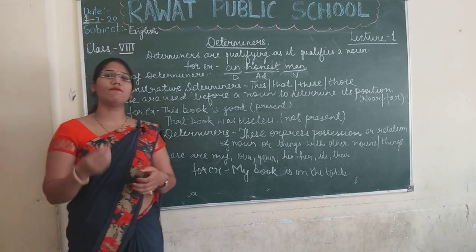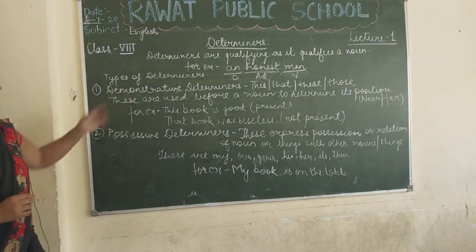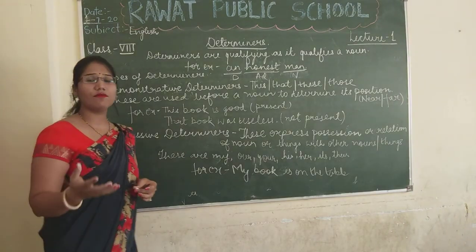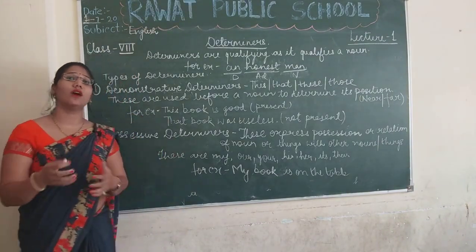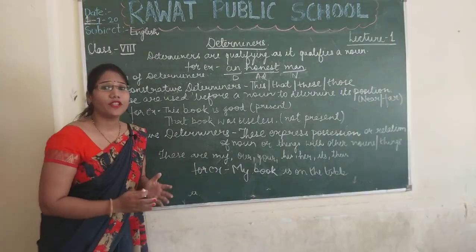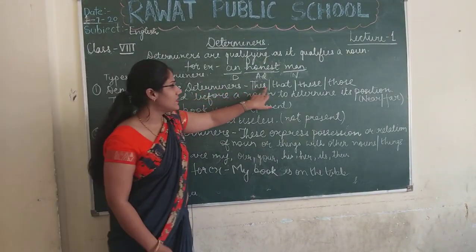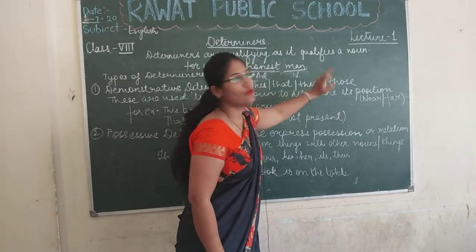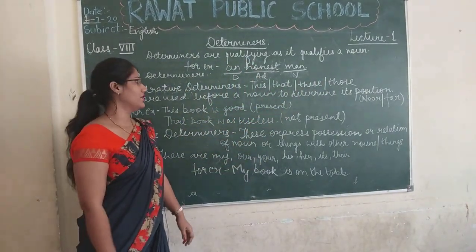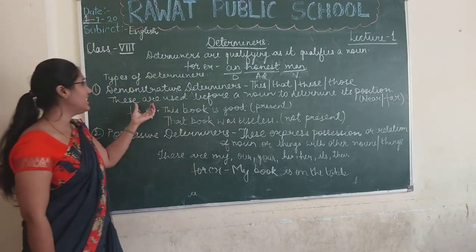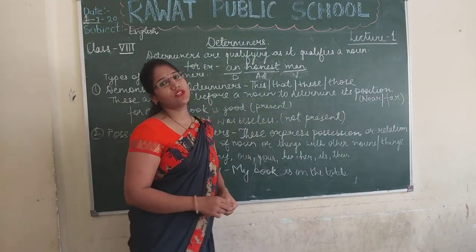We will discuss them one by one. Today we will discuss demonstrative determiners. Demonstrative determiners are those which are used to point out a noun or a thing — joh point out karne ke kaam aate hain. For example: this, that, these, and those. These are the examples of demonstrative determiners. They are used before a noun to determine its position.